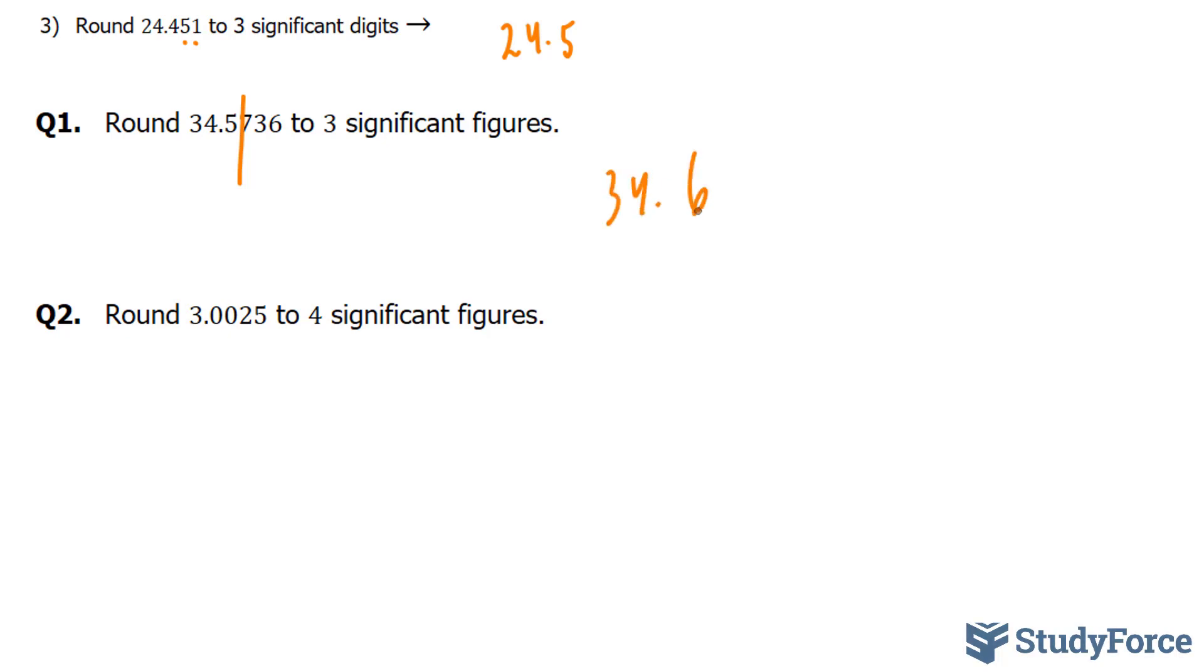And lastly, the question reads, round 3.0025 to four significant figures. Four significant figures would lead up to this 2. And the first discarded digit is a 5.